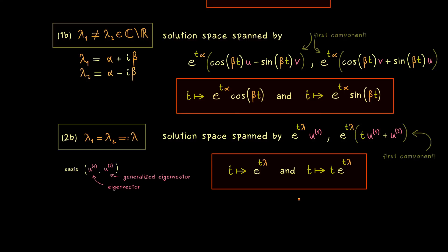And there we have it — this is the whole result. Now you can solve every general autonomous linear ODE of second order. You just have to calculate the zeros of the characteristic polynomial, check which case you are in, and immediately know the two solutions that span the whole solution space. By having the whole solution space, you can definitely solve every initial value problem. I think this is good enough for today — let's meet in the next video, and have a nice day. Bye-bye!